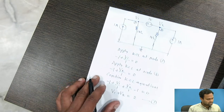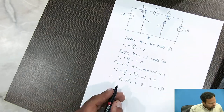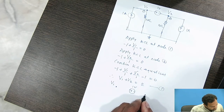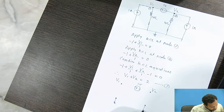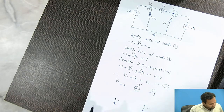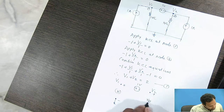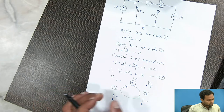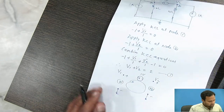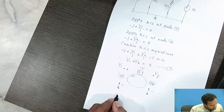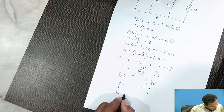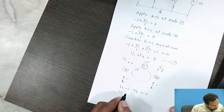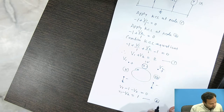Now we have combined the KCL equations. Next, we apply KVL to this particular portion — the super node. Drawing the loop with 1 volt, V1, and V2 with the ground, applying KVL in a clockwise manner gives: V1 − 1 − V2 = 0, which means V1 − V2 = 1. We will call this equation number 2.